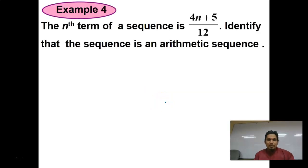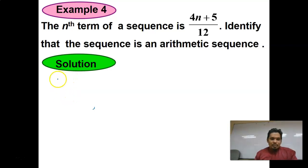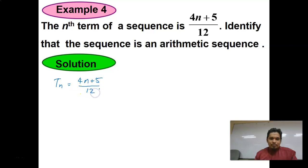The nth term of a sequence is Tn = (4n + 5) / 12. Identify whether the sequence is an arithmetic sequence. Let's find the solution. We compute T(n−1) by substituting n−1: T(n−1) = (4(n−1) + 5) / 12 = (4n − 4 + 5) / 12 = (4n + 1) / 12.